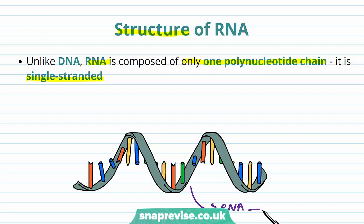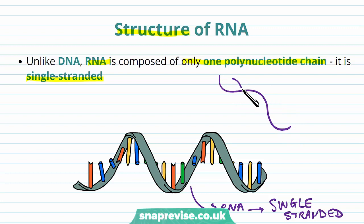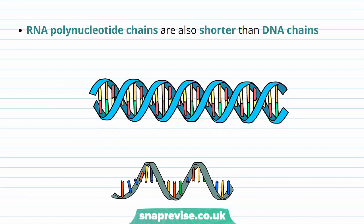Whereas DNA — remember it had that double-helix shape where there were two strands of polynucleotides almost kind of dancing around each other along a common axis — so DNA we would call double-stranded. That's one of the most important differences that you'll pick up. As well as this, the RNA polynucleotides tend to be a lot shorter than the DNA ones.